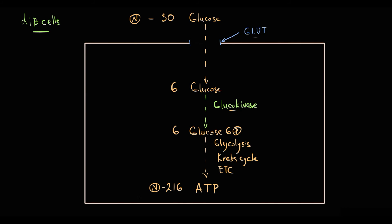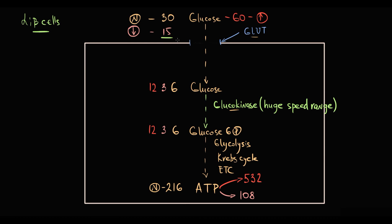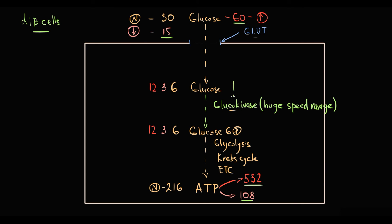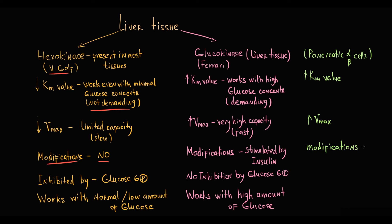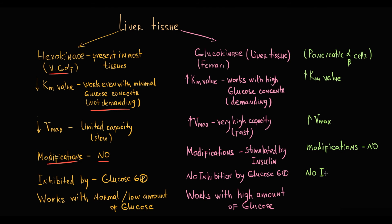The cell can then determine the blood glucose level under various conditions. If the amount of ATP per minute decreases to 108, blood glucose is two times lower than normal — hypoglycemia. If the amount of ATP rises to 532, blood glucose is two times higher than normal — hyperglycemia. This huge speed range, from minimal speed with low glucose producing low ATP, to maximum speed with high glucose producing high ATP, is exactly what makes glucokinase the ideal enzyme to assess blood glucose level. In contrast to liver tissue where insulin increases glucokinase speed, glucokinase in alpha and beta pancreatic cells is not regulated by insulin, and pancreatic glucokinase is not inhibited by glucose 6-phosphate.